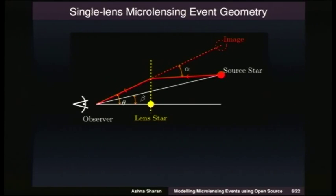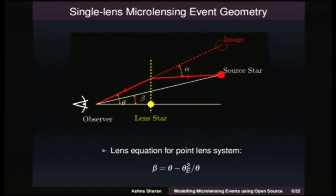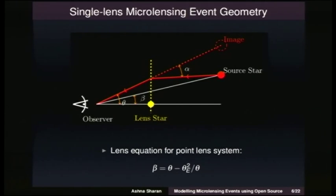Consider a simple geometry, skipping all the mathematical derivations. We have a simple lens equation where theta_e is the angular radius of the Einstein ring. The Einstein ring is what we get when we have perfect alignment of the source, observer, and the lens. The deflection angle is the only input from the theory of general relativity — that is the only input; other than that, we don't care.